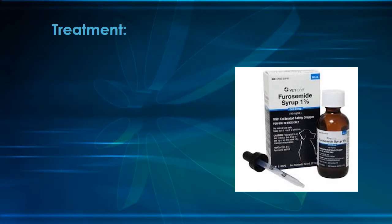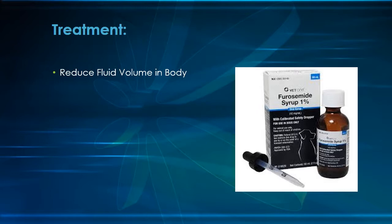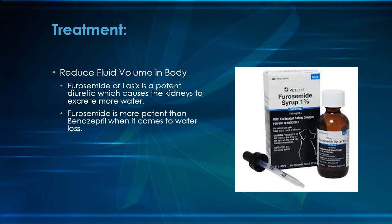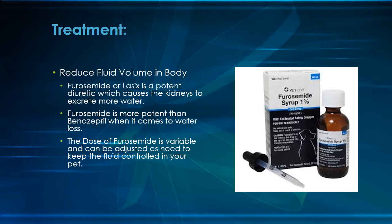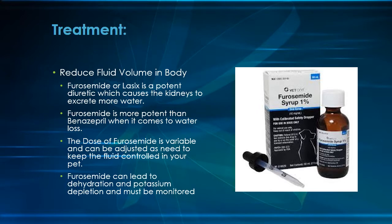In addition to Benazepril, we use a potent diuretic called furosemide, or Lasix, to help reduce the fluid load in the body. Furosemide works directly in the kidney and causes it to excrete more water as it forms urine. Furosemide is more potent than Benazepril and does most of the heavy lifting when it comes to maintaining proper fluid levels in a cardiac patient. It can be given two to three times daily, and the dose can be adjusted as needed. Furosemide can cause excessive water and potassium loss and must be monitored to ensure safety.